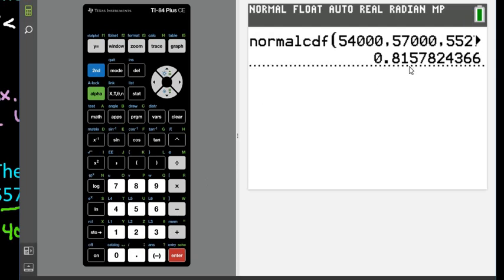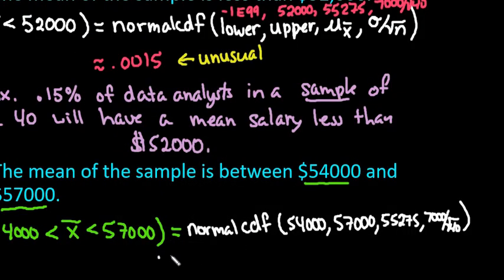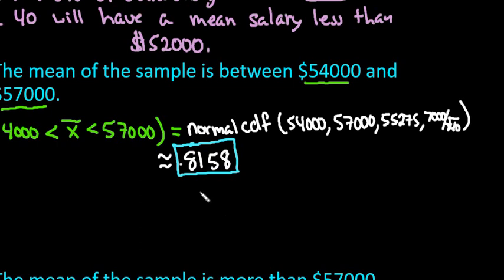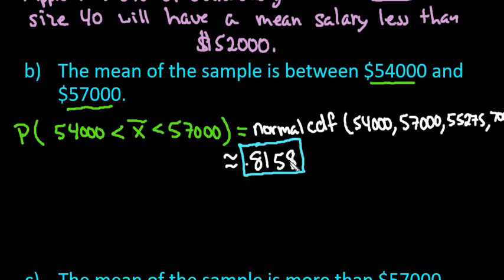Hit Enter and the probability is 0.8158 rounded to four decimal places. If you did this with a table, rounding z-scores and areas means you won't get as accurate a result — my table value was 0.8155, very close but slightly different. So be aware of that if you're supposed to be using tables. We could interpret this as: approximately 81.58% of samples of size 40 of data analysts will have mean salaries between $54,000 and $57,000.